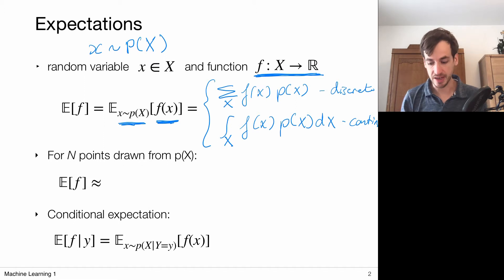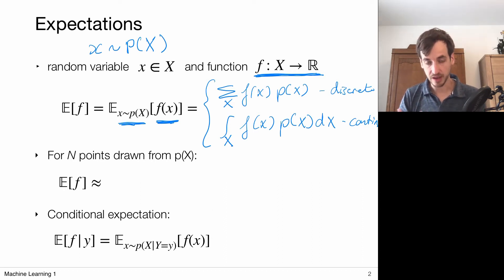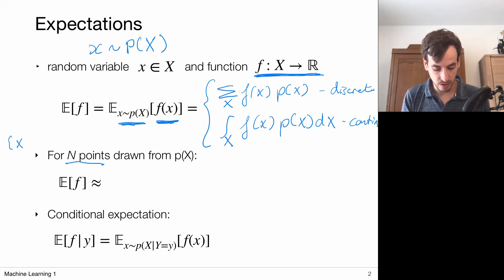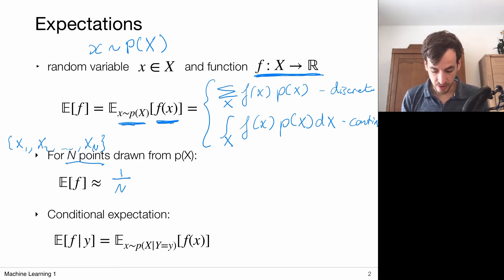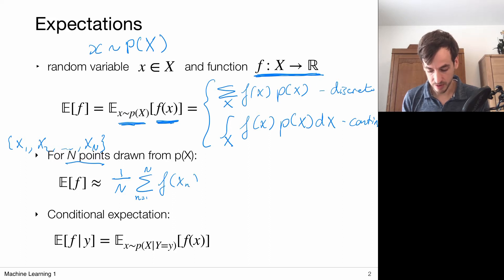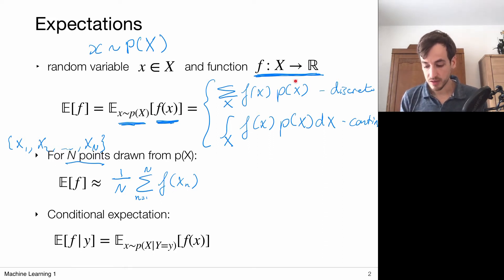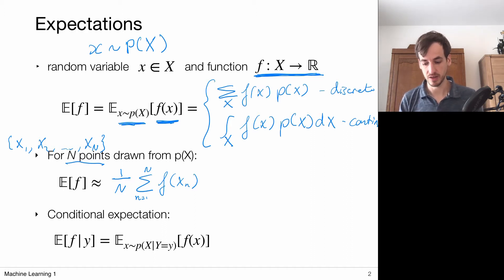Now we do not always have direct access to this probability distribution, but we could still make an approximation of this expectation. We do so by adopting the frequentist viewpoint. So we make N observations: X1, X2, up to capital N number of these random variables. Then from all these observations, we can make an approximation of the expectation simply by taking the average over all samples — from n=1 to capital N of the function values evaluated on these samples. So this is really just computing the mean.